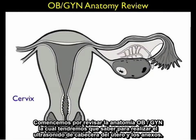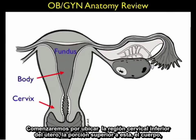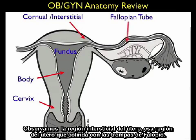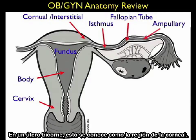Let's begin by reviewing the OB/GYN anatomy that we'll need to know to perform bedside ultrasound of the uterus and the adnexa. We'll begin by locating the lower cervical region of the uterus, the portion above that — the body — and the fundal region of the uterus above the body, which is where we define an intrauterine pregnancy to be located. Notice the interstitial region of the uterus, that region that abuts the fallopian tube. In a bicornuate uterus, this is known as the cornual region.